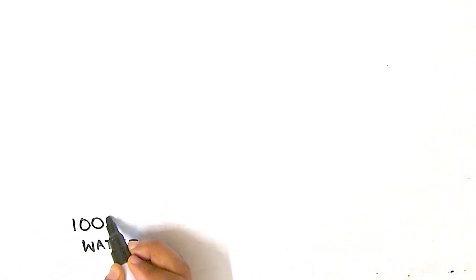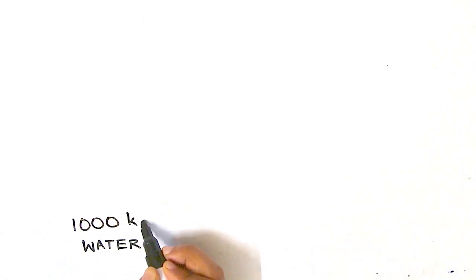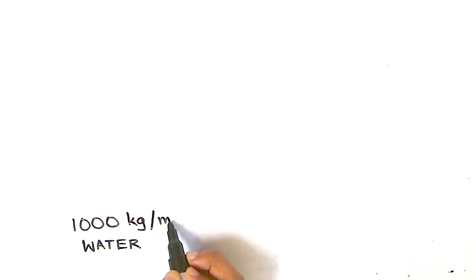Density is not just for solids — anything, solid or liquid or gas, can have a density. The density formula is the same: mass in a unit of volume. For example, water has a density of 1000 kilograms per meter cube.